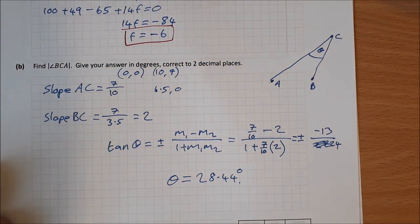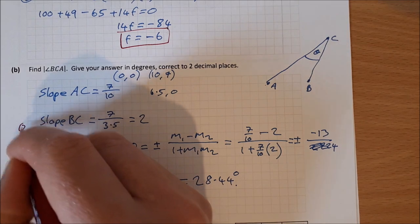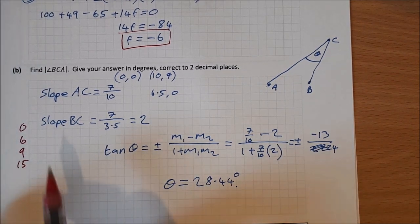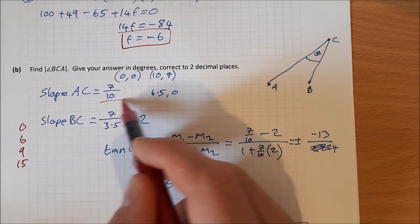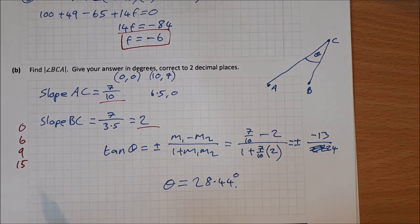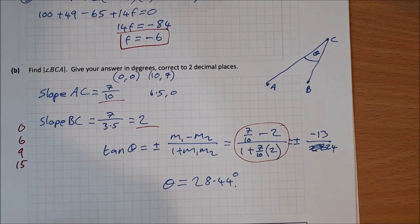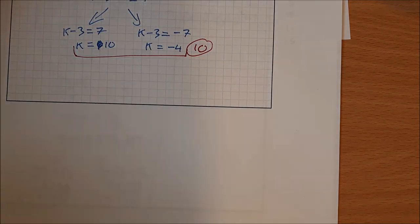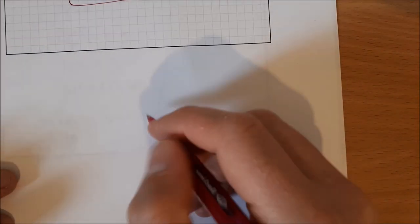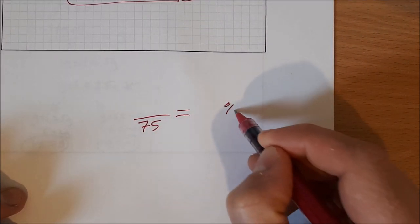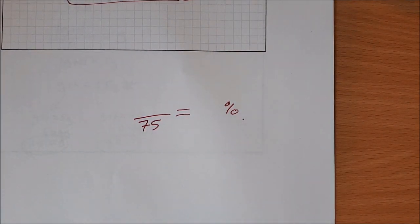For this question: 0, 6, 9, or 15 marks. Six marks for getting either slope (7/10 or 2). Nine marks for full substitution into the angle formula. Fifteen marks for the correct final answer of 28.44°. The entire exam is marked out of 75 — divide your marks by 75 to find your percentage.